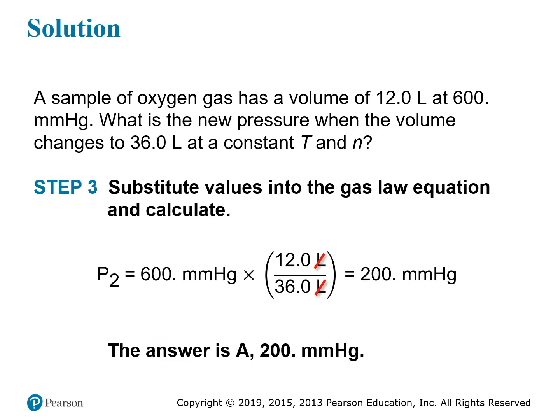As a shortcut: 12 liters has to triple to get to 36 liters, so if the volume triples, the pressure is reduced to a third. So 600 divided by 3 is 200 mmHg. You can use this shortcut when the numbers work out neatly, though not every problem will have such convenient numbers.